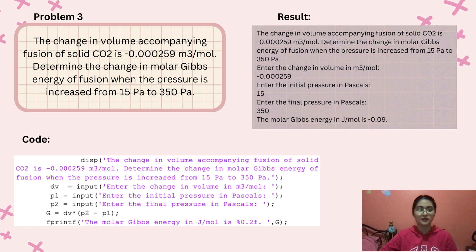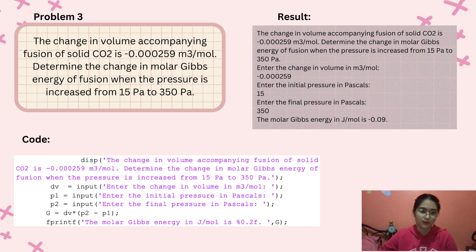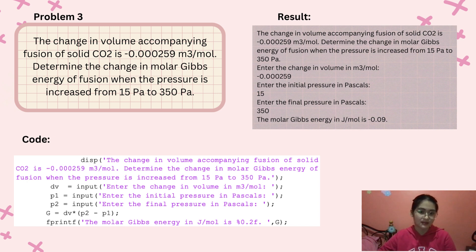The third problem is: the change in volume accompanying fusion of solid carbon dioxide is negative 0.000259 cubic meters per mol. Determine the change in molar Gibbs energy of fusion when the pressure is increased from 15 Pascal to 350 Pascal. You enter the change in volume, which is negative 0.000259; the initial pressure, 15 Pascals; and the final pressure, 350 Pascals. The molar Gibbs energy in joules per mol is negative 0.09.